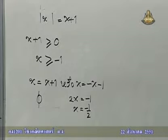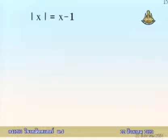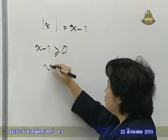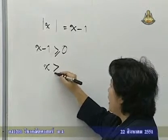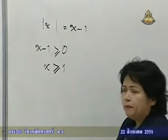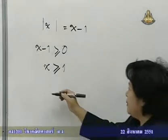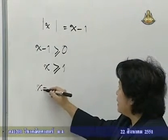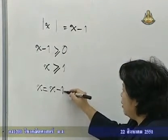If you look at this, the absolute X will change from X plus 1 to X minus 1. Let's take a look. X minus 1 is more or equal to 0, so X is more or equal to 1.